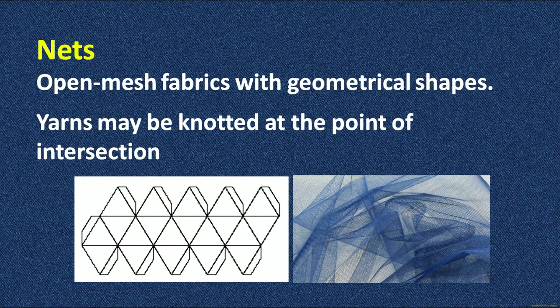Now we will discuss about net. Net is an open mesh fabric with a geometrical shape; yarn can be knotted at the point of intersection. You must have seen net used as a table top cover. You can have a net saree which has small open pores. The open mesh fabric construction has inter-looping at the point of intersection of the yarns, forming a proper open mesh-like structure which is very lightweight and porous because it has small holes.